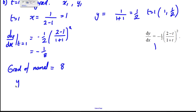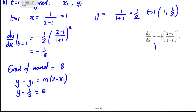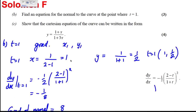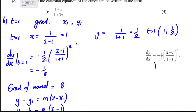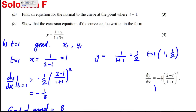Now we're going to use y subtract y₁ is m times x subtract x₁. So we can say that y subtract 1 half is 8 times x subtract 1. And we're done — it didn't ask us for it in any specific form, so that is absolutely fine to give as your final answer.